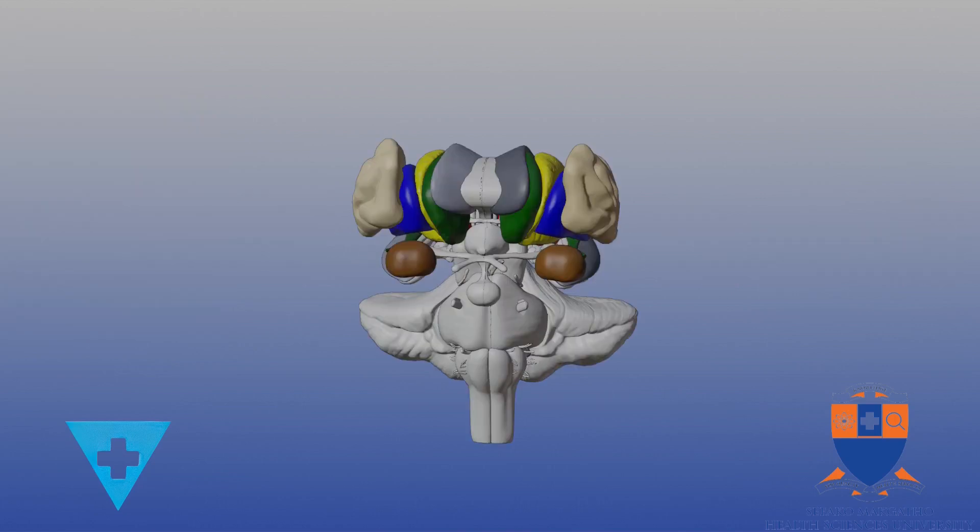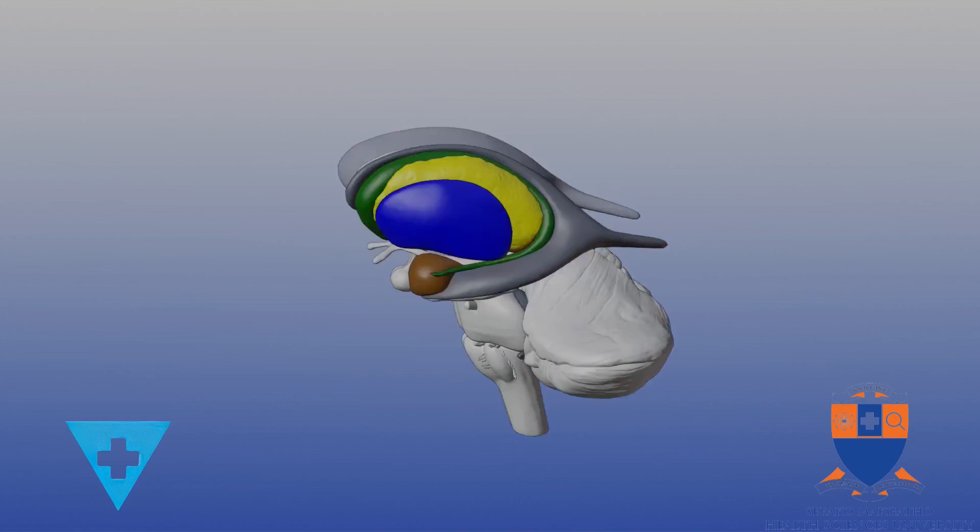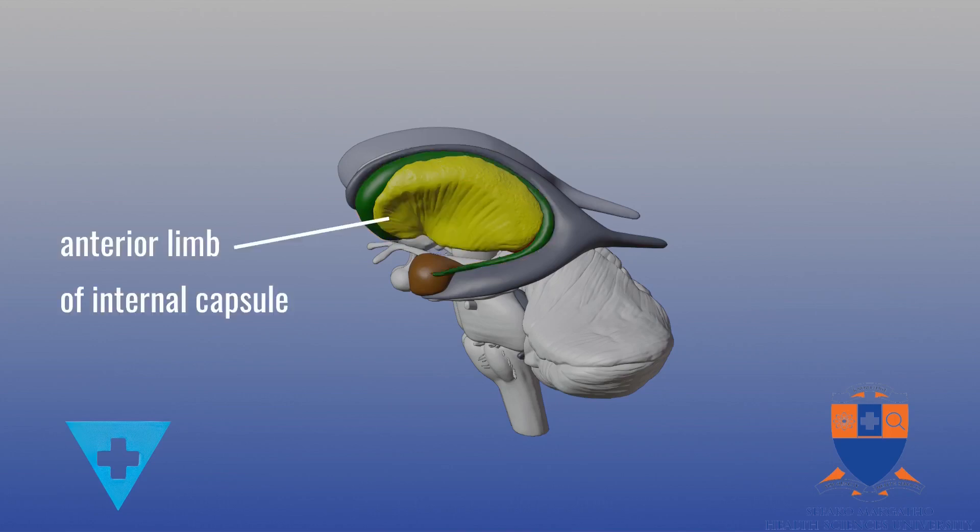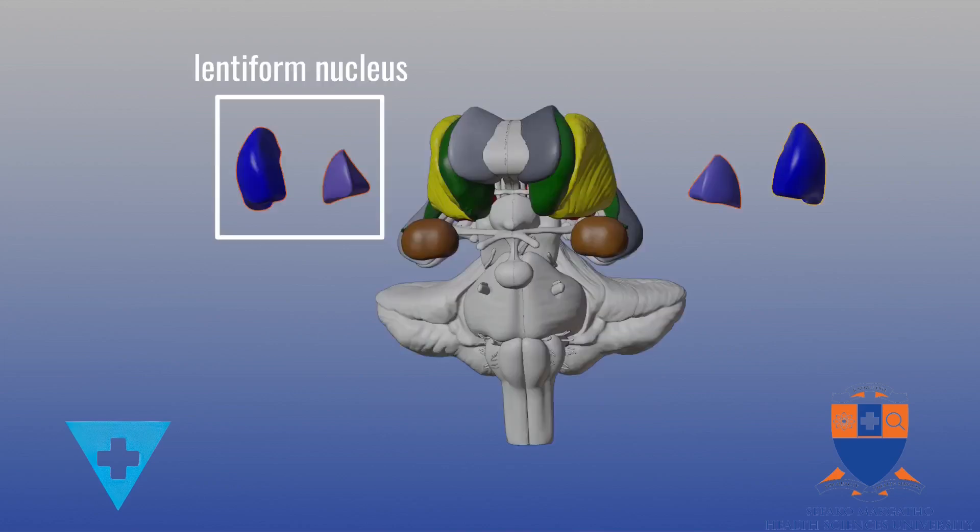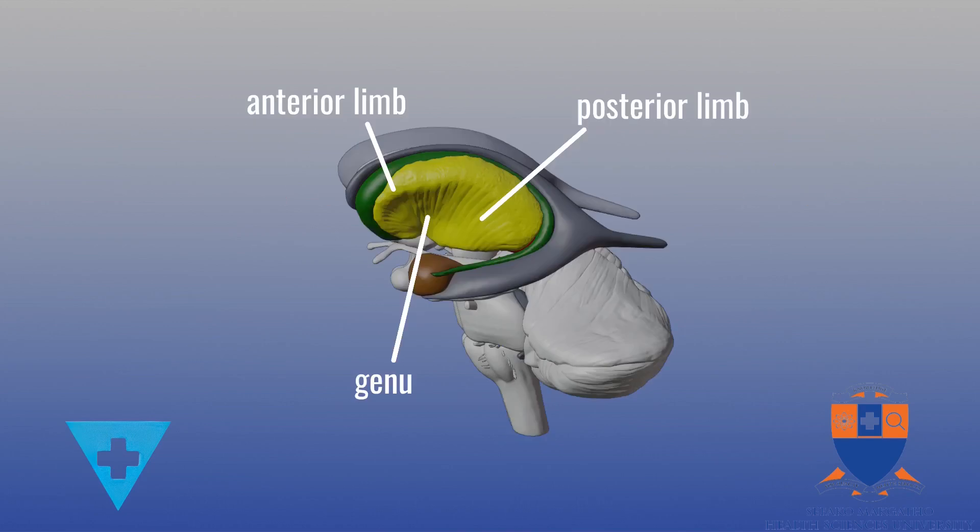They are responsible for controlling motor movements, learning, and memory. They are positioned next to the internal capsule. The caudate nucleus is located medial to the anterior limb of the internal capsule, while the globus pallidus and the putamen, together known as the lentiform nucleus, are located laterally to the genu and the limbs of the capsule.